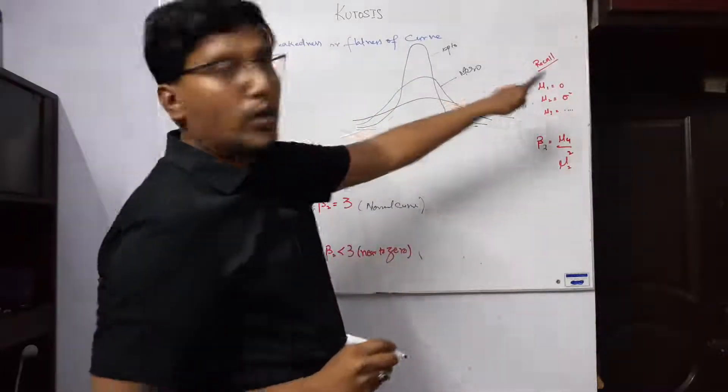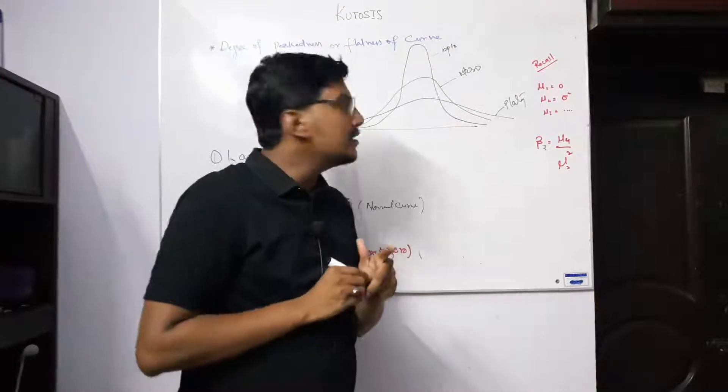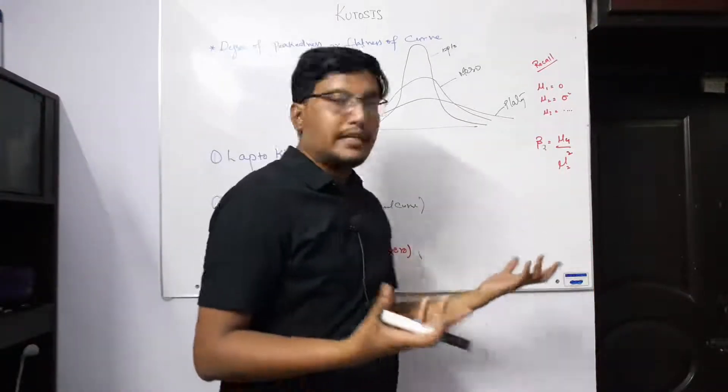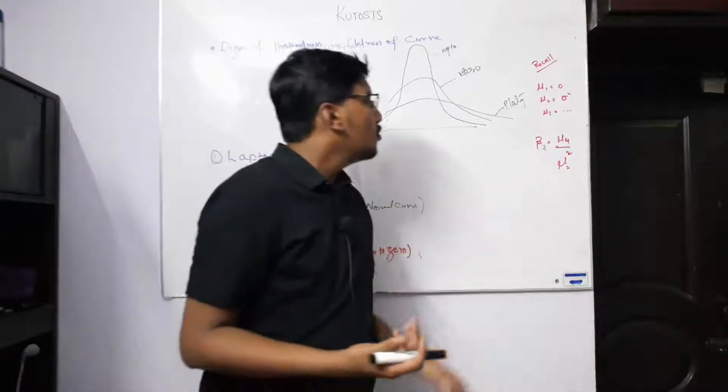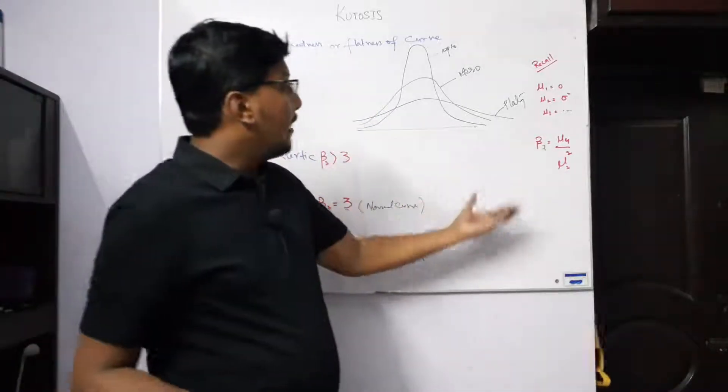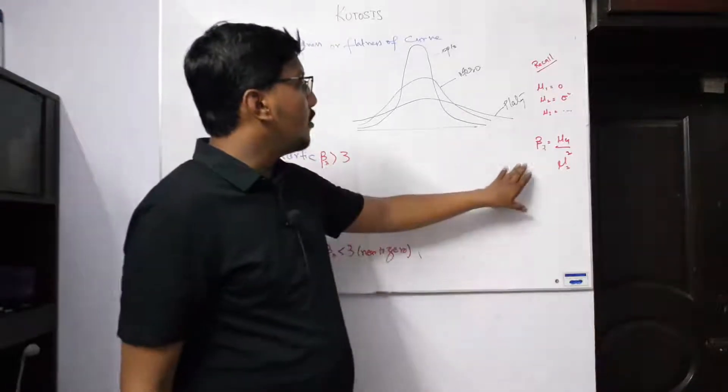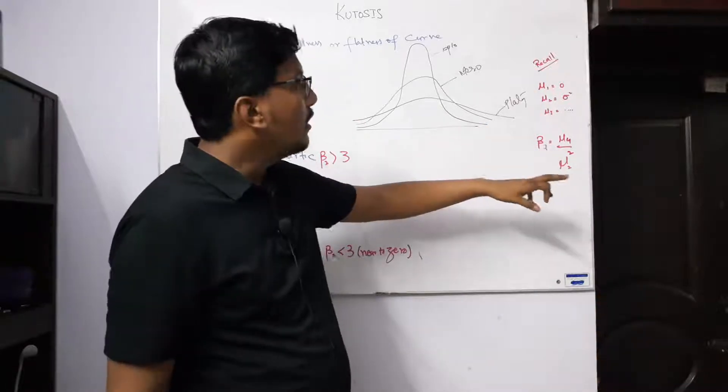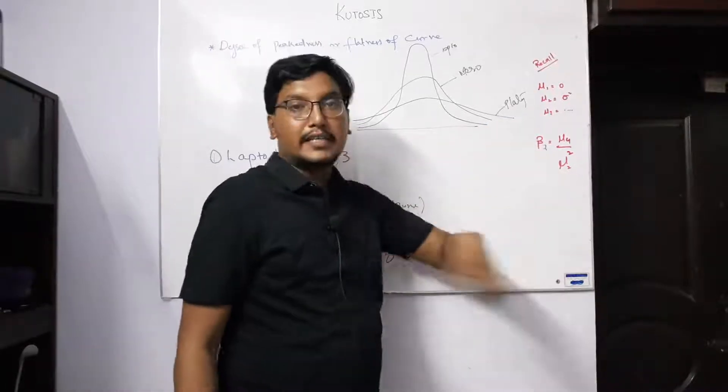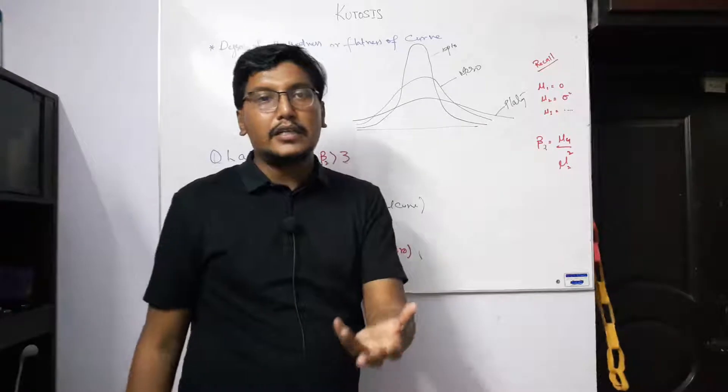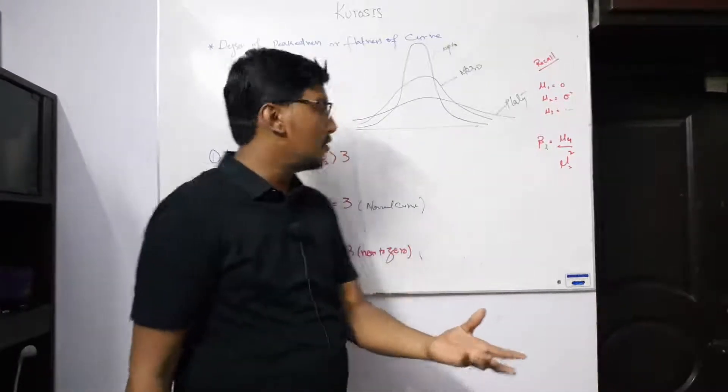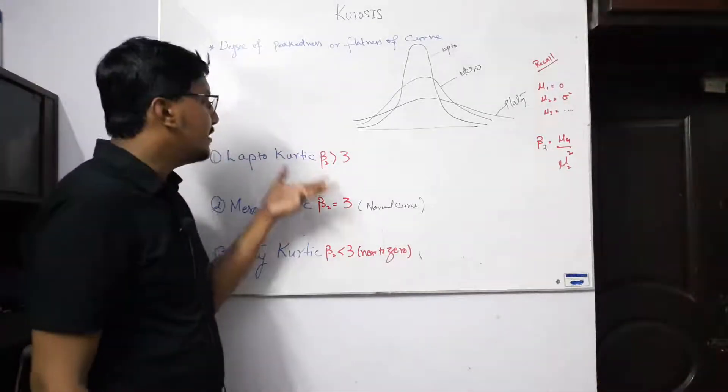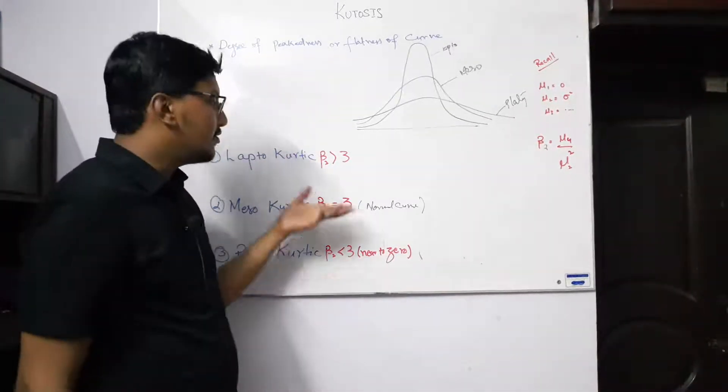Beta 2 formula: we have to recall the moments that we discussed in lecture number 17. The first moment is 0, second moment is variance, and third and fourth. When we are interested to calculate kurtosis, kurtosis means beta 2, and beta 2 can be computed if we divide the fourth moment by the second moment squared. Whatever answer we get, we can interpret by using these three properties, these three characteristics.